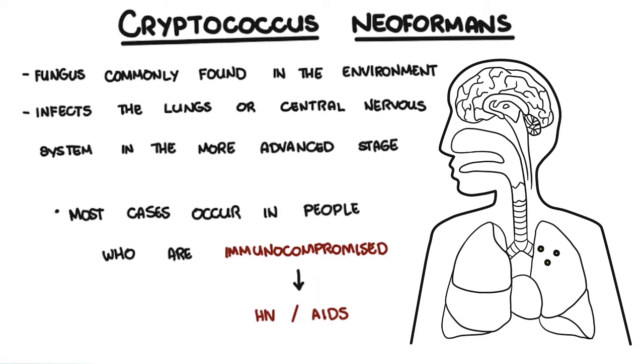Since Cryptococcus neoformans enters the body through the respiratory tract, infection can present as a pneumonia-like illness before moving to the central nervous system and causing meningoencephalitis. It is fatal if left untreated.